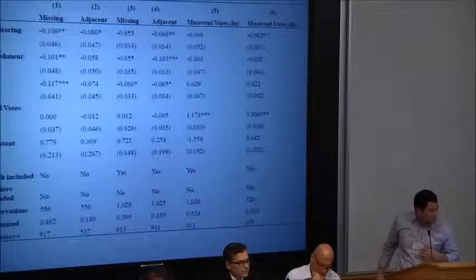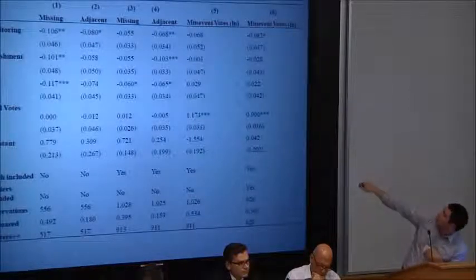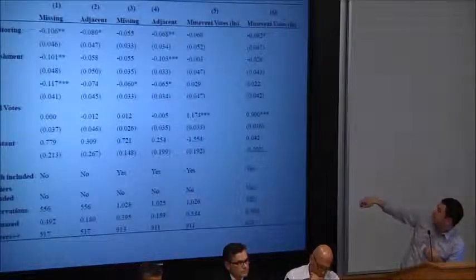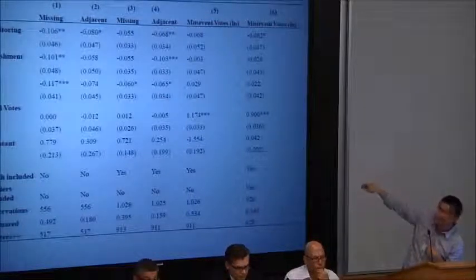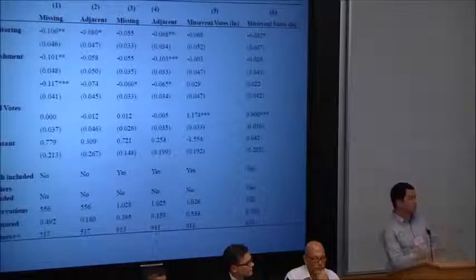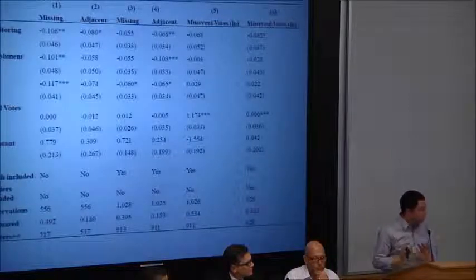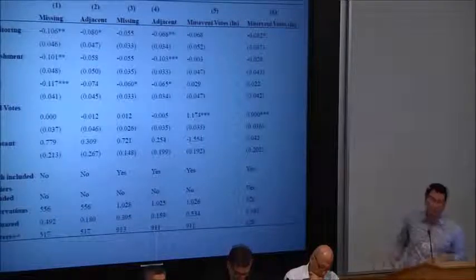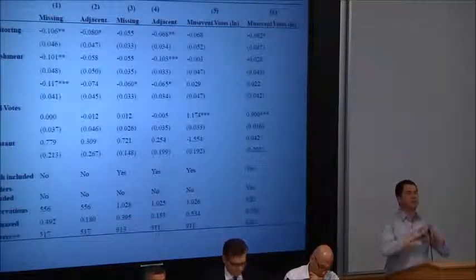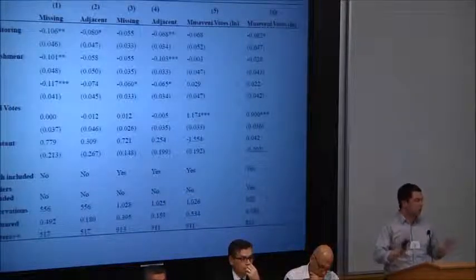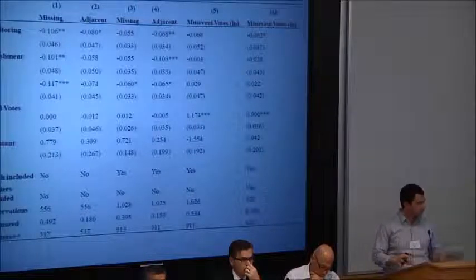Looking at Museveni's vote total: in column five with the full sample including all outliers, we don't see strong effects. But when we trim outliers at the top and bottom 5% — the places where Museveni either got nearly every vote or didn't get any — we actually see significant effects, which makes sense. In places where a candidate is either completely strong or completely weak, our intervention probably doesn't have much effect. But in the middle, once you trim those outliers, we do start to see effects.